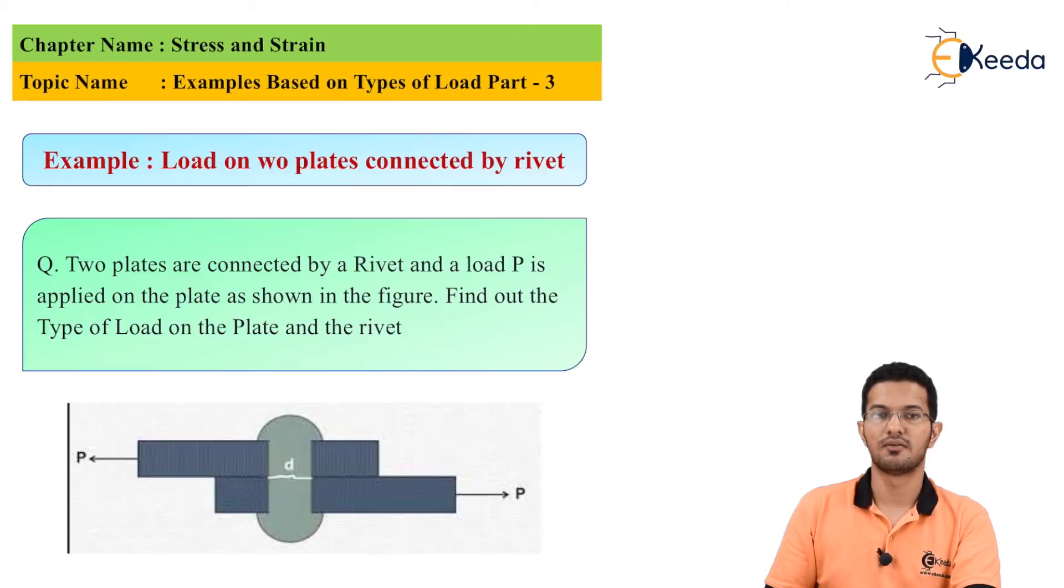In this question, we have been given that two plates are connected by a rivet and a load P is applied on the plate as shown in the figure. Find out the type of load on the plate and the rivet. As we can see from the figure, two plates are connected by a rivet joint and a load P is applied on the plate as shown.